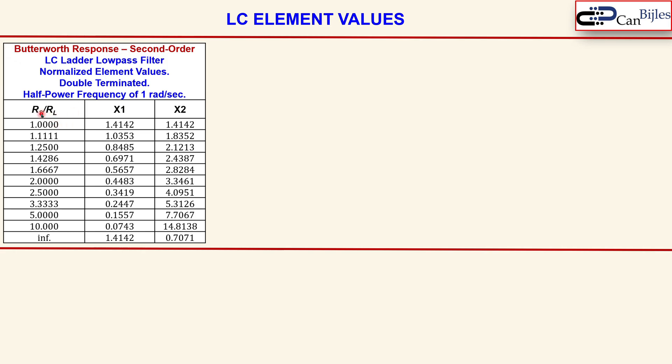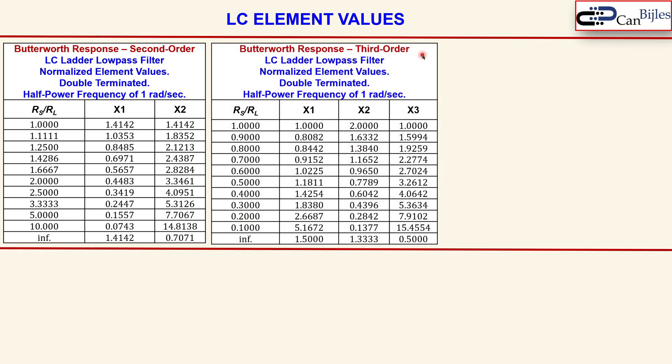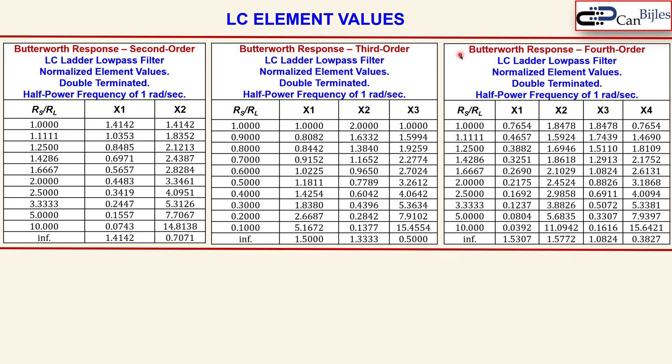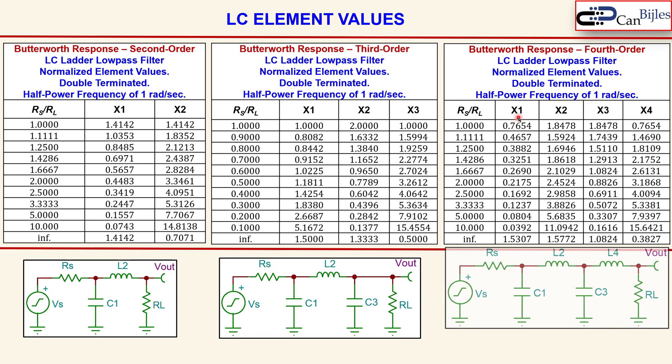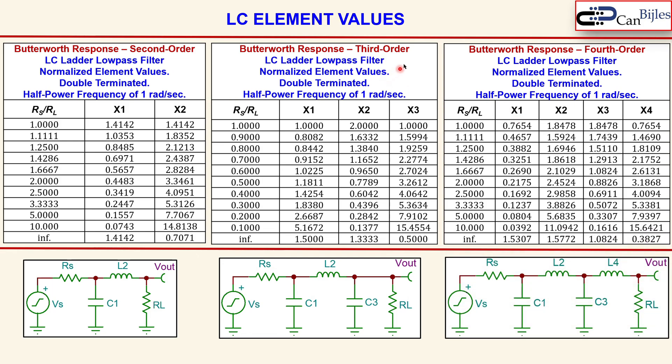Again you see here the ratios for Rs over Rl, so source resistor over the load resistor, and these are the components in the normalized values. This is for the third order and this is for the fourth order, and these are the circuits you can use for those designs.